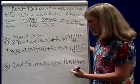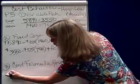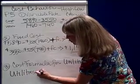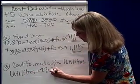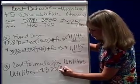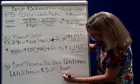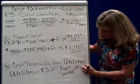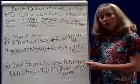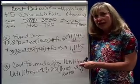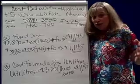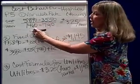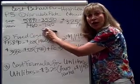The last step is the cost formula. The cost formula for utilities each month is equal to $3.25 per hour worked plus the fixed cost of $1,145. I can use this formula within my relevant range of activity, which is between 740 hours and 1,460 hours worked.